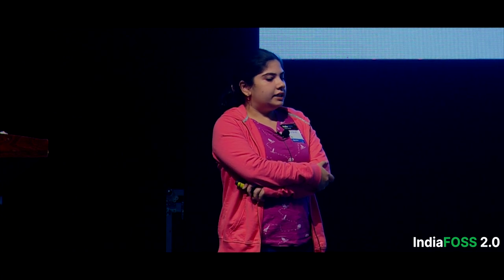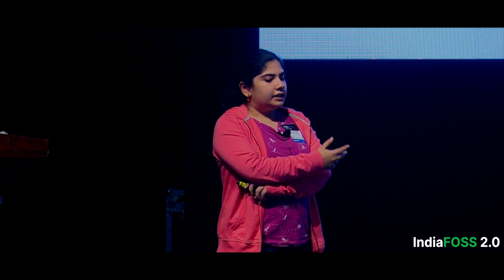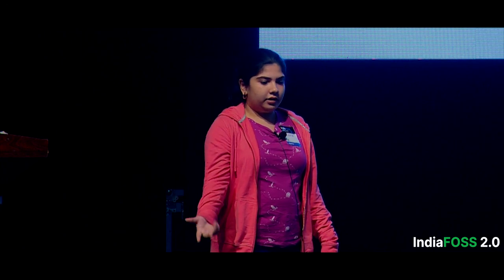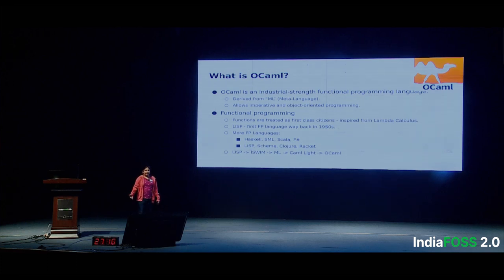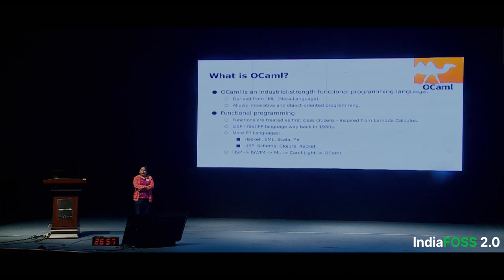More functional programming languages in use currently are Haskell, Standard ML (also derived from the ML family of languages), and Scala, which is functional programming on the JVM. The Lisp family of languages includes commonly used ones such as Scheme, Clojure, and Racket. As for OCaml, its lineage dates back to Lisp, then to ISWIM (which stands for 'If You See What I Mean'), then ML, and then Xavier Leroy and Damien Doligez at the French research institute INRIA wrote the first version of Caml Light, which was a predecessor of OCaml.